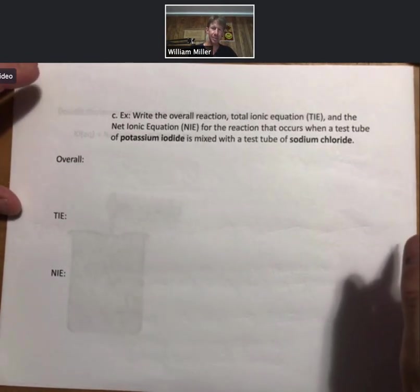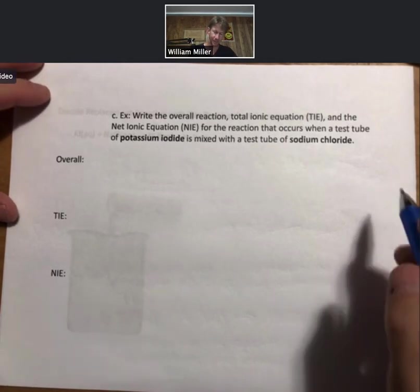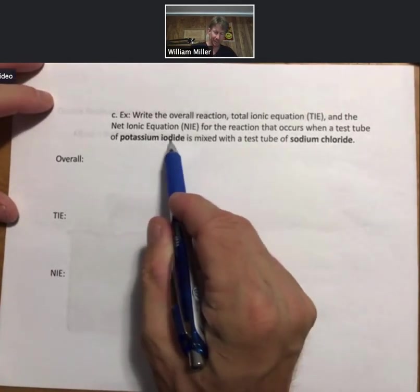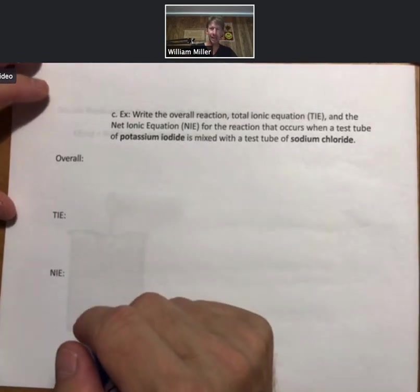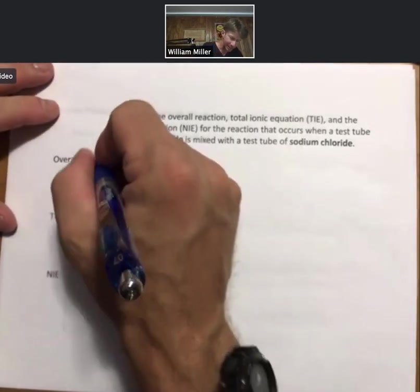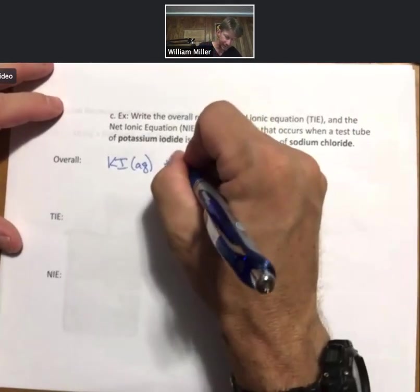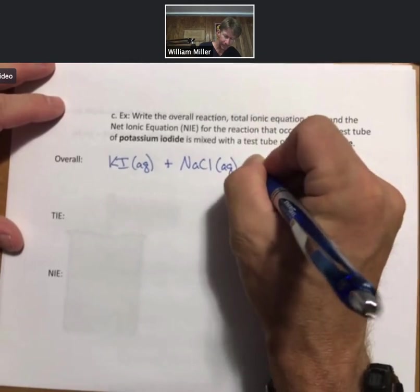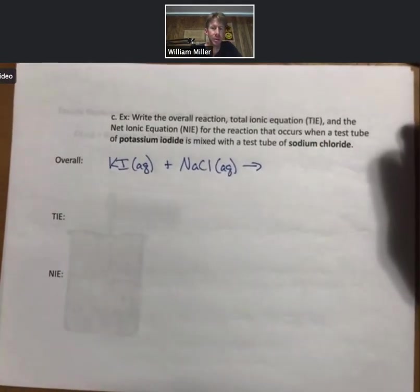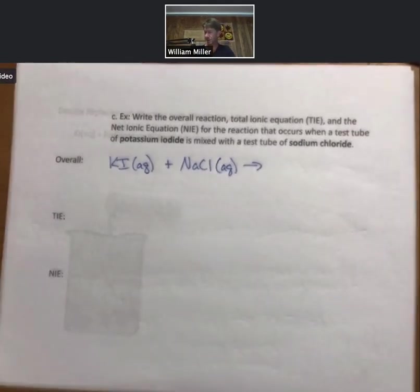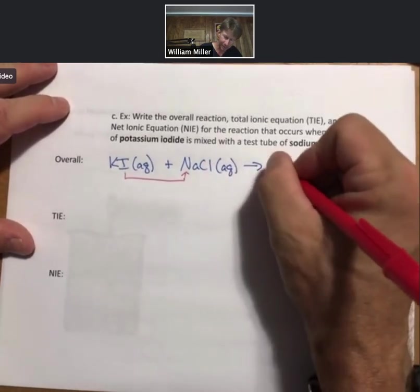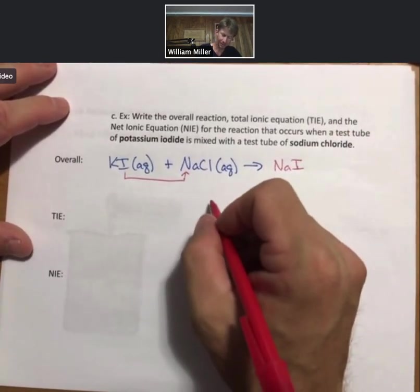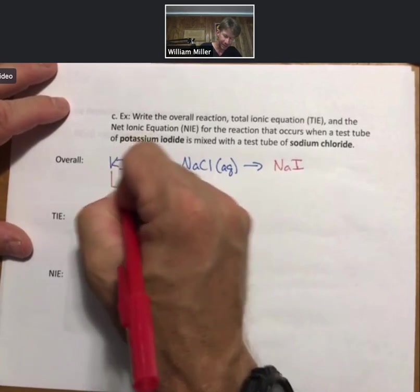Now, a similar case. The overall reaction for the process between potassium iodide and sodium chloride, the TIE and the NIE. For the overall reaction, potassium iodide and sodium chloride are going to change partners. The changing partners part looks like this. Take the I minus and pair it with Na. Those are both ions. Pair the potassium with the chloride.